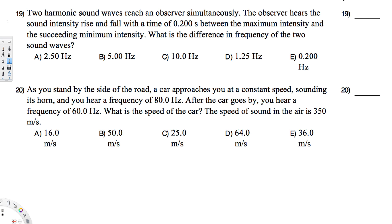This question asks about two harmonic sound waves that reach an observer simultaneously. The observer hears the sound intensity rise and fall with a time of 0.27 seconds between the maximum intensity and the succeeding minimum intensity. What's the difference in frequency of the two sound waves? The technique is to first calculate the period. Since we have two waves, the period is going to be two times 0.200, so the total period is 0.400 seconds.